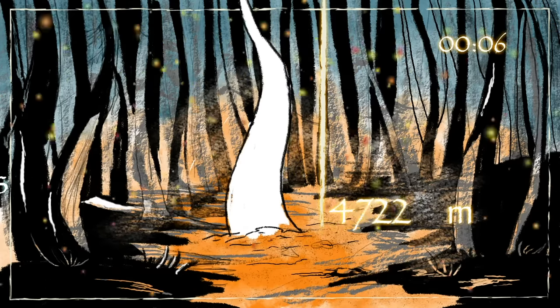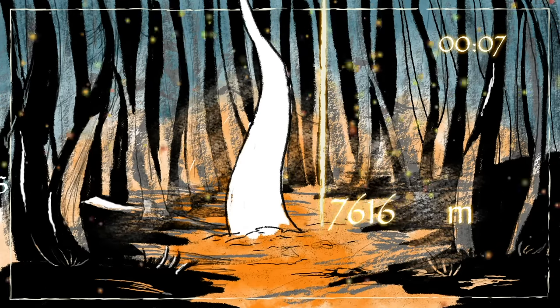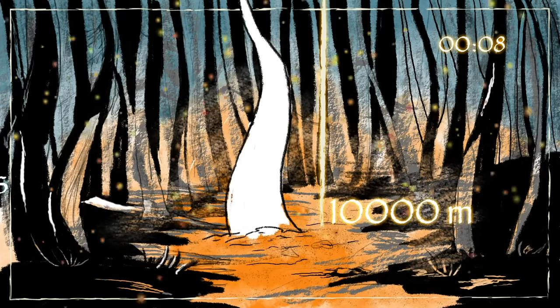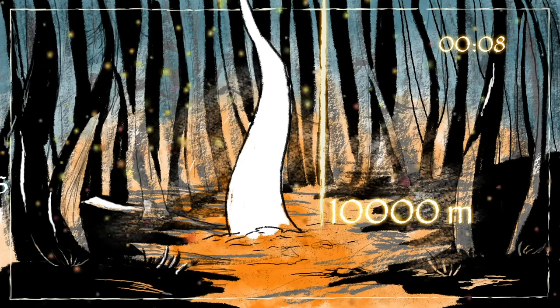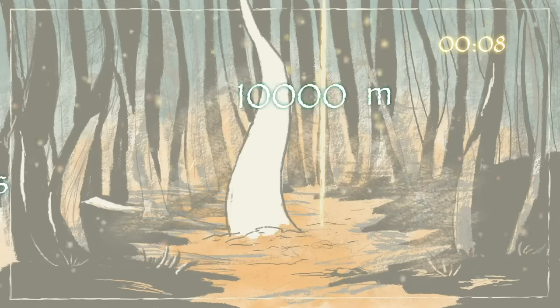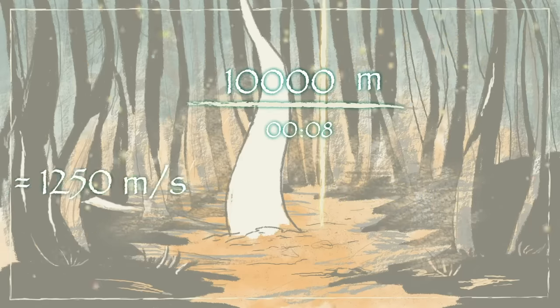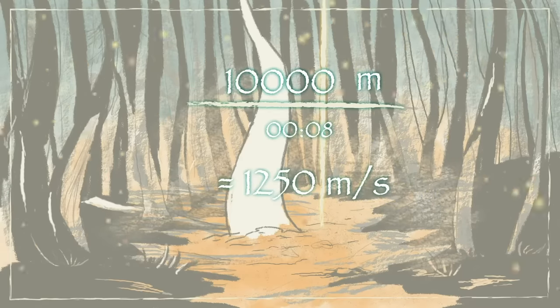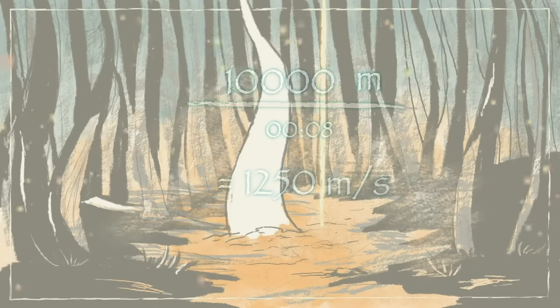To find the rate of change of the height of this bean sprout, we find out how much it has grown within a period of time. Dividing the height by the time gives you the rate of change: 1250 meters per second. Easy, right?